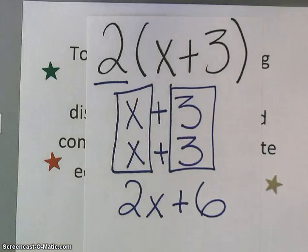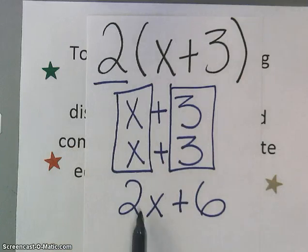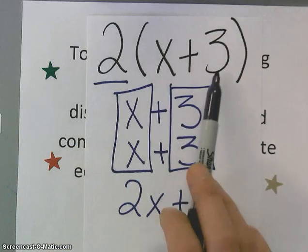And when we looked at that, we went, oh, well, I know I can take 2 times x and get 2x, and 2 times 3 and get 6.